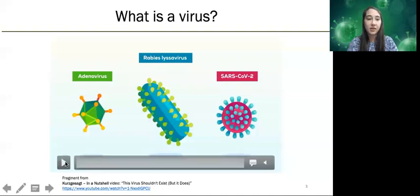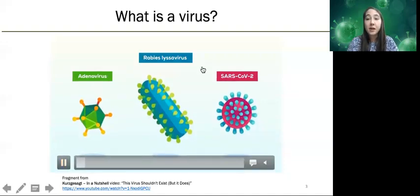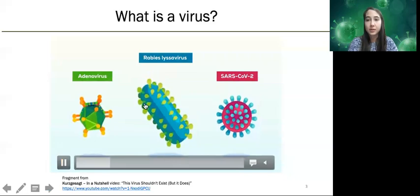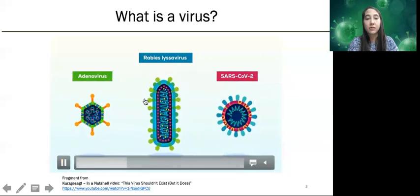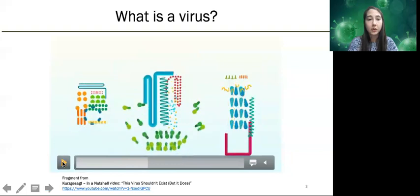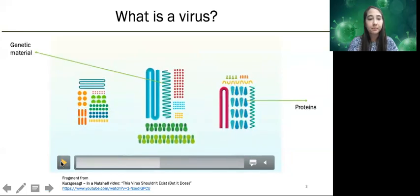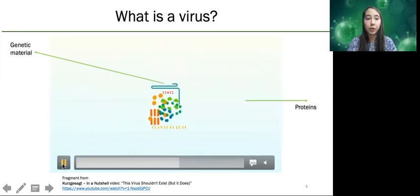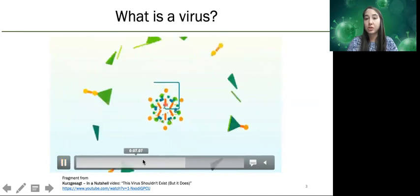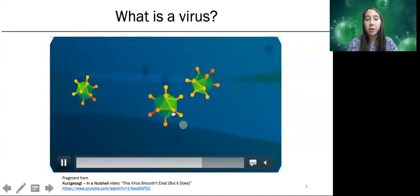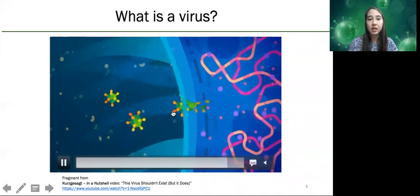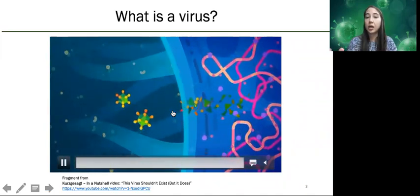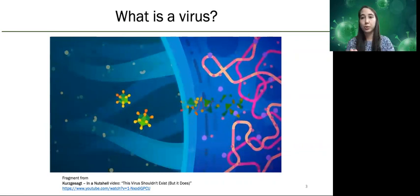So let's start with what a virus is. Viruses are very small parasites that come in a lot of different forms. In general, they are composed of genetic material and some proteins. They need these proteins and genetic material in order to infect a host and complete their replication cycle. The viral particles — those proteins and genetic material — are packaged, and they have to find a host cell to infect and hijack the resources of those cells in order to use them to their benefit and complete their replication cycle.